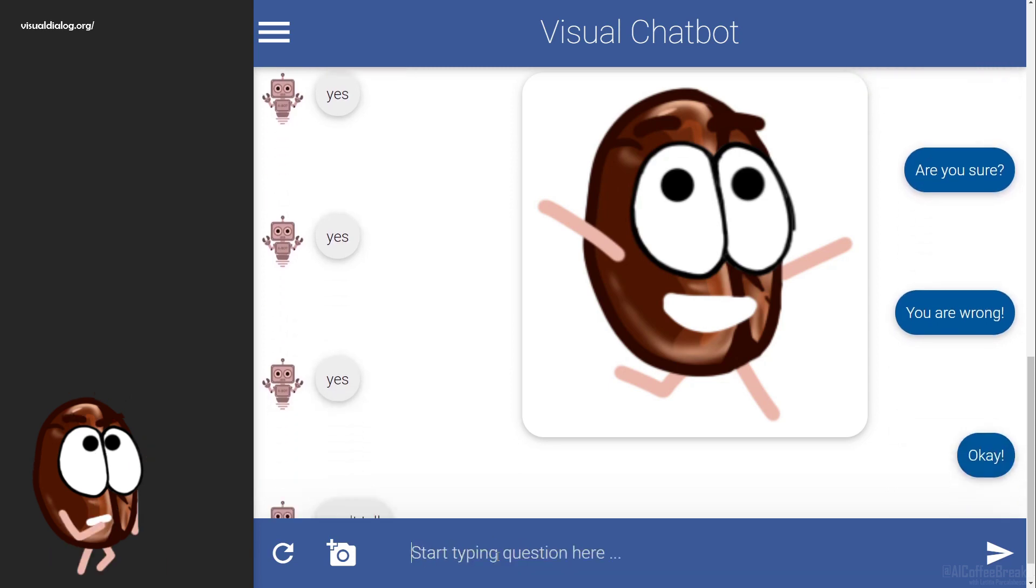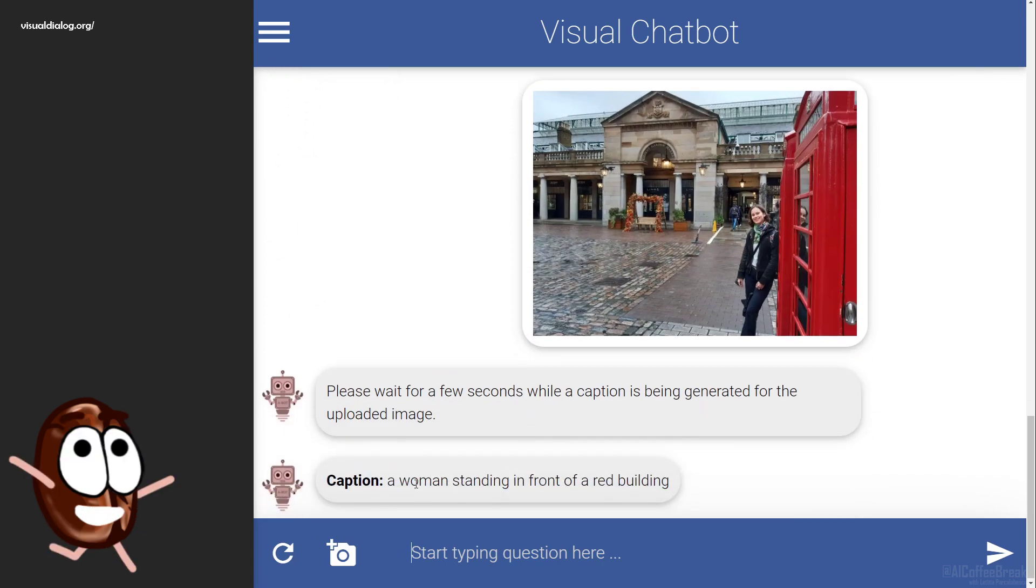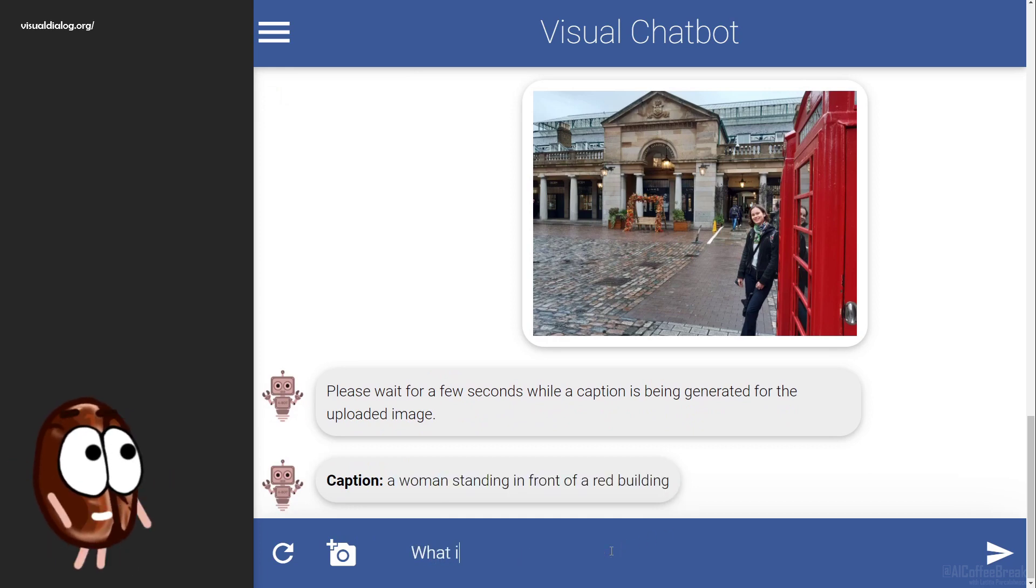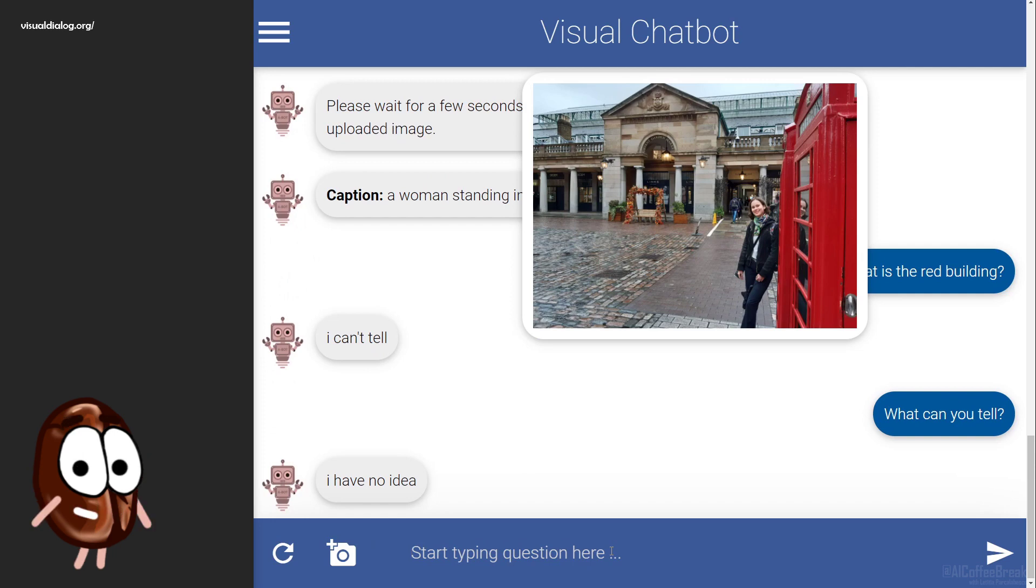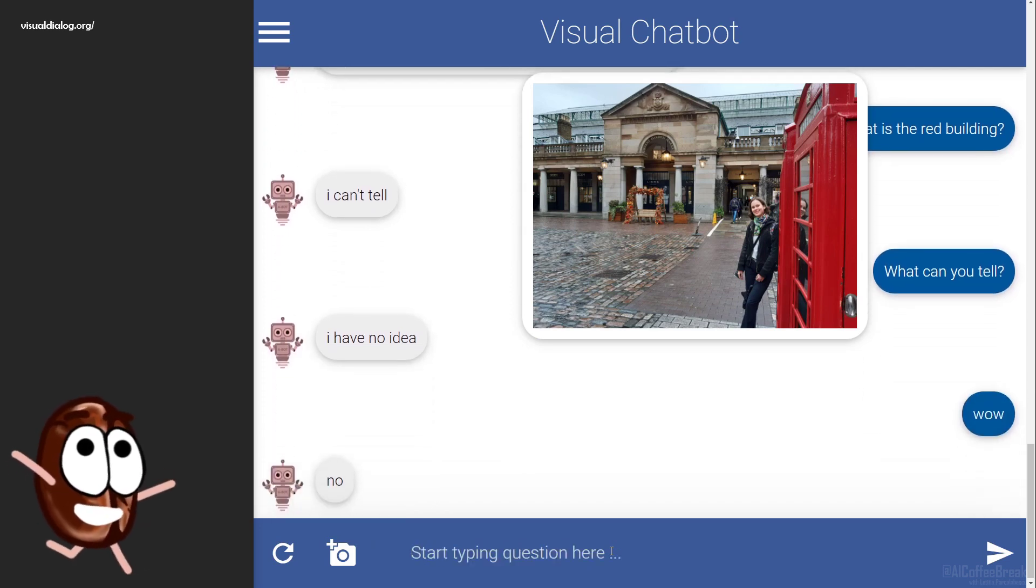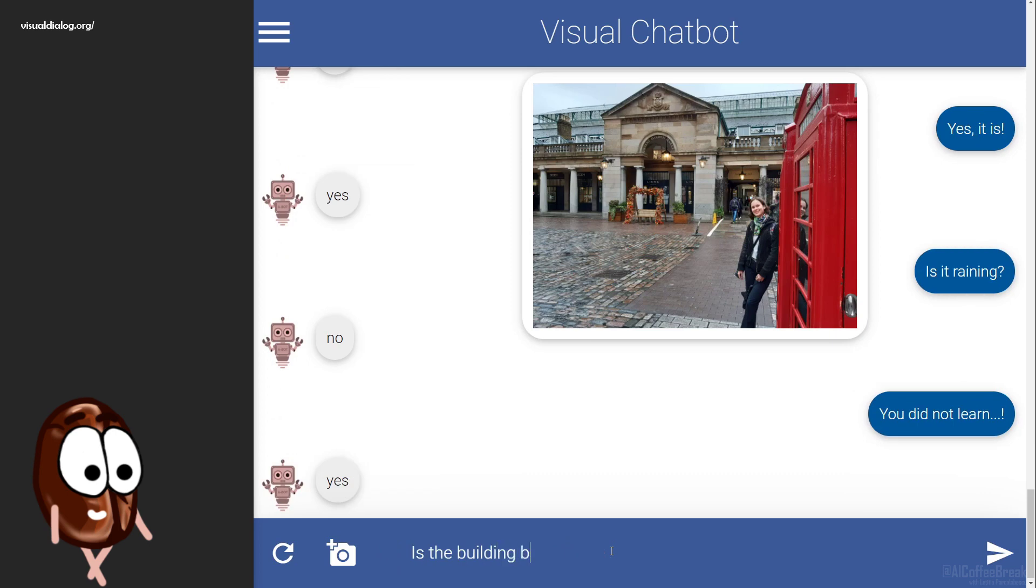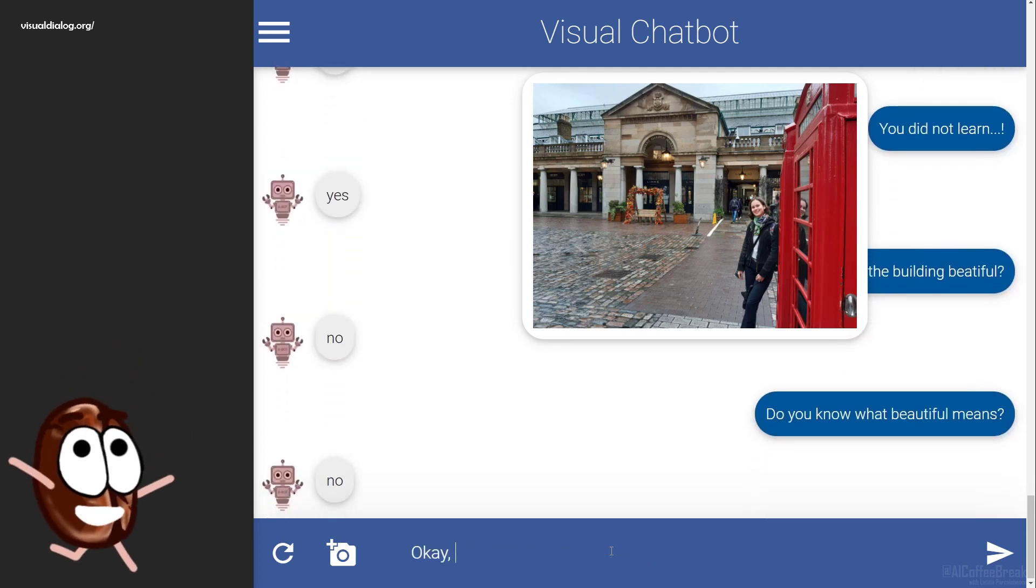Let's try with another image where I think that the model will recognize something. Yes, it's a woman standing in front of a red building. Okay. What is the red building? I can't tell. What can you tell? I have no... Okay. Bye.